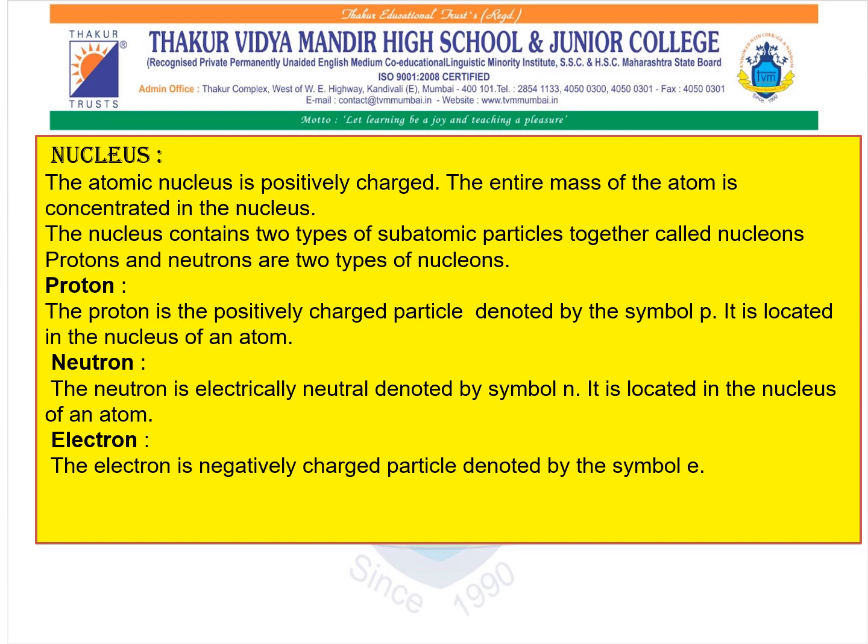Proton is the positively charged particle, which is denoted by the symbol P. Neutron is electrically neutral — that is, it has no charge — and is denoted by the symbol N. Both protons and neutrons are located inside the nucleus. Electrons are negatively charged particles which revolve around the nucleus in specific orbits and are denoted by the symbol E.